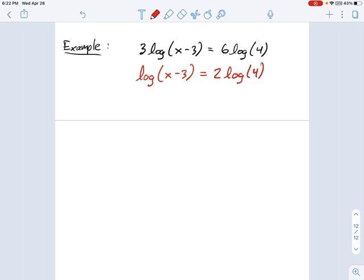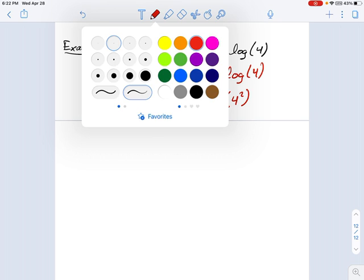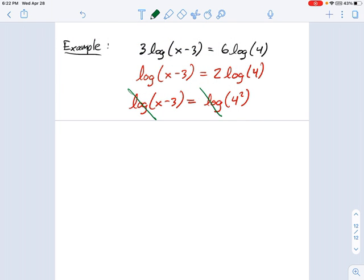We can use the power rule of logarithms. Log of x minus 3 equals log of 4 squared. And now look, I've got a logarithm on both sides. So what that means is I can just come along and cross those things out and continue on with my problem.